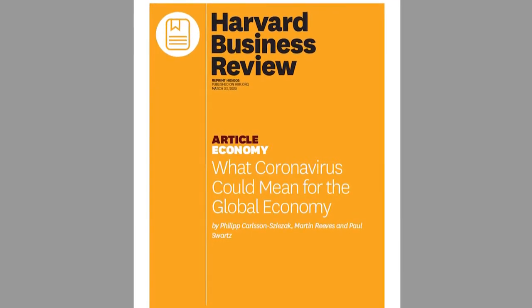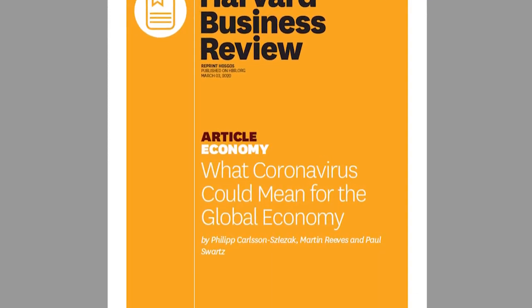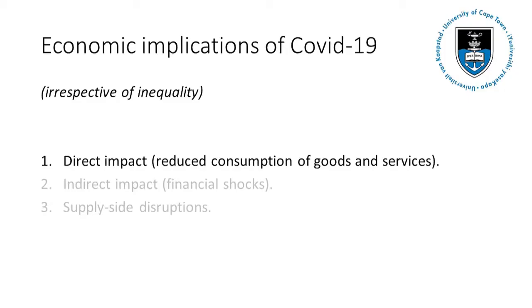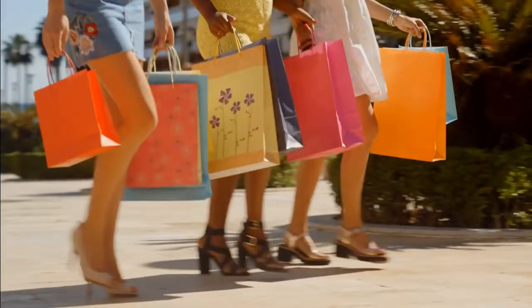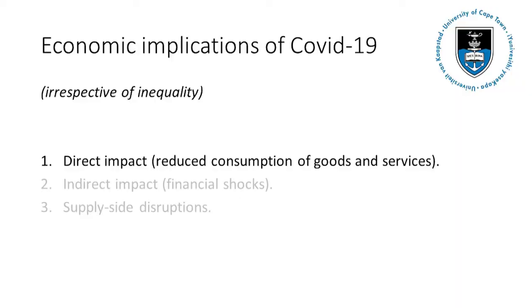When it comes to the economic impact, Carlsen, Slezak, and co-authors make a distinction between three different types of impact. The first is a direct hit to consumer confidence that translates to a reduced demand for consumption of services and goods. This is a direct channel because the drop in demand is a direct consequence of the virus and the associated lockdown policies.